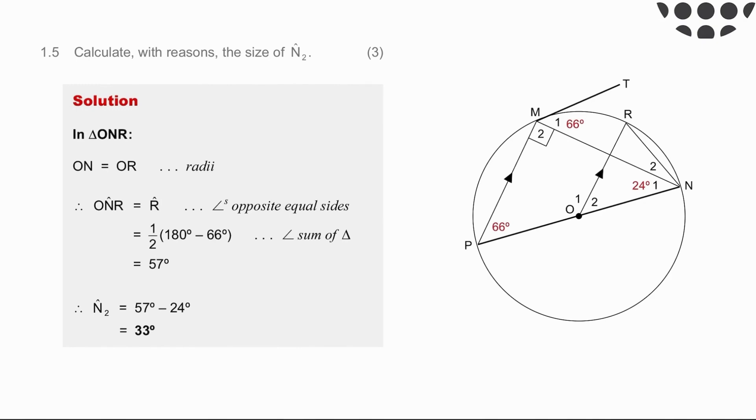So starting from the beginning, ON equals OR radii. Therefore, angle ONR equals angle R. So these two angles are equal. Angles opposite equal sides. We've already discussed the subtraction, so we can simply state the answer is 57 degrees. Don't forget the reason, angle sum of triangle. We don't need a reason on the last part because we are simply doing a calculation. So angle N2 is 33 degrees. That was a challenging question compared to the others in this particular example.